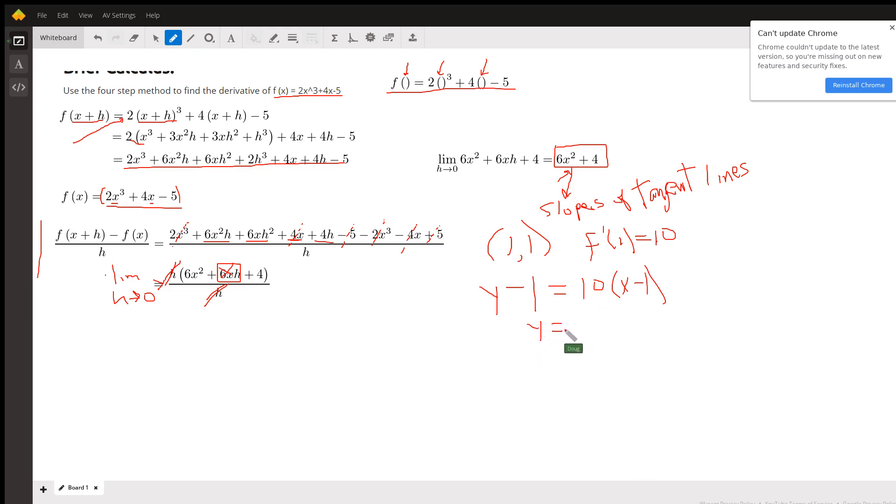Y equals 10x minus 10 plus this one when I transpose to the other side. So, 10x minus 9. There you go. I hope that helped. If you have any questions, post a comment.